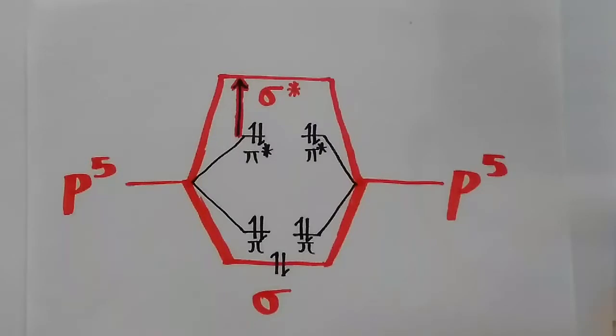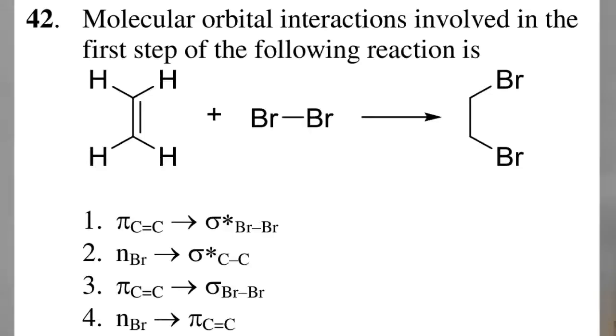Just now, we had seen that the lowest unoccupied molecular orbital, i.e., the LUMO, of halogen is sigma-star. Option 1 becomes the right choice.